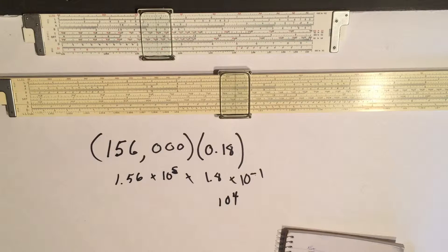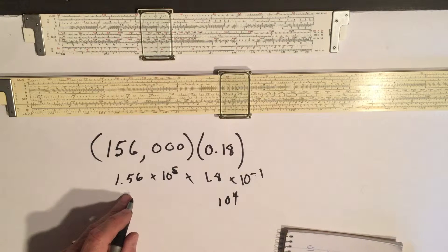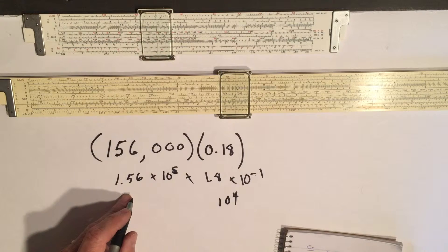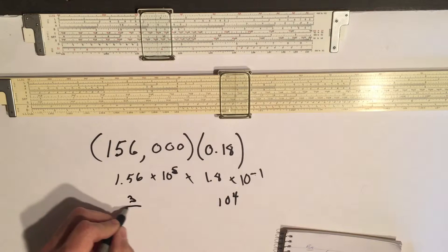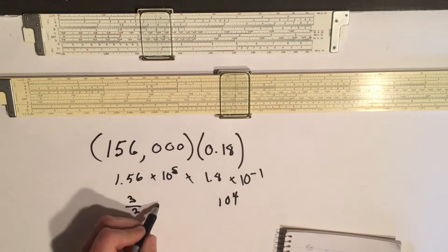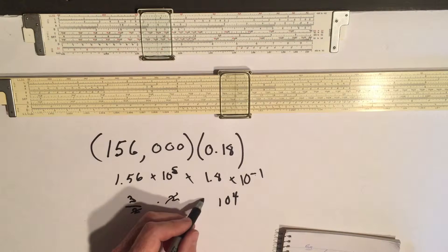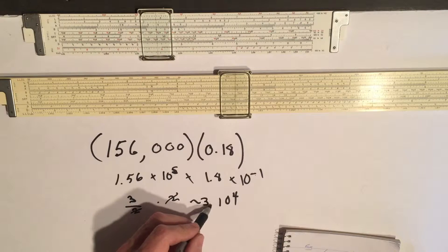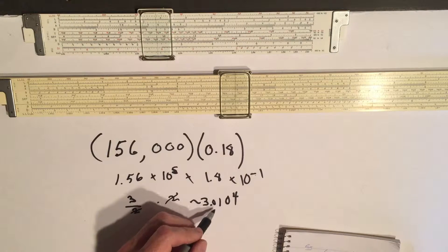And if you want to estimate this, you could say that this is close to actually 3 halves if you want to guesstimate it precisely. 1.8 times 2 would be approximately 3.0 times 10 to the 4th.